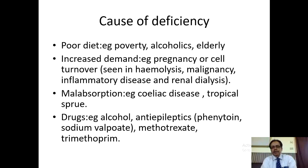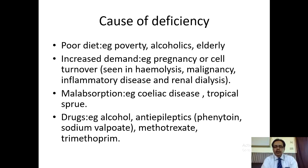When there is more hemolysis, more cells are being formed and more folic acid is required, leading to megaloblastic anemia. Similarly, chronic inflammatory diseases and renal dialysis can also lead to folate deficiency. Malabsorption is also a common cause, especially celiac disease and tropical sprue. Drugs which commonly cause folate deficiency include alcohol, anti-epileptics, phenytoin, sodium valproate, methotrexate and trimethoprim.